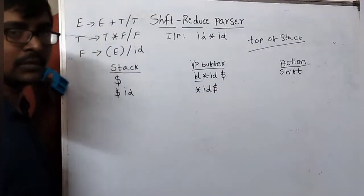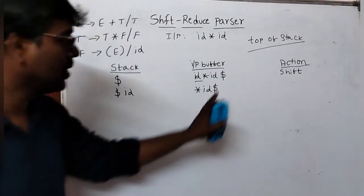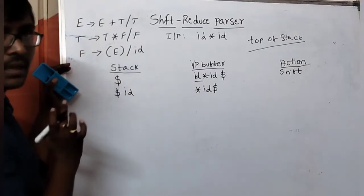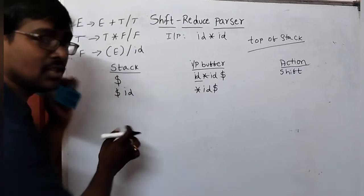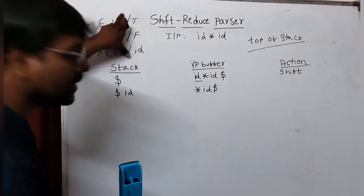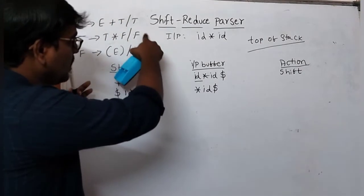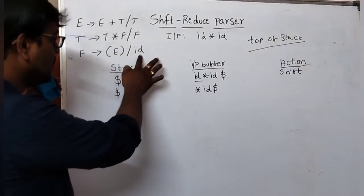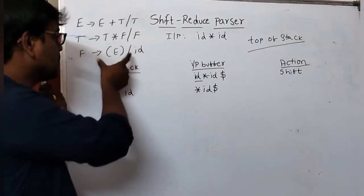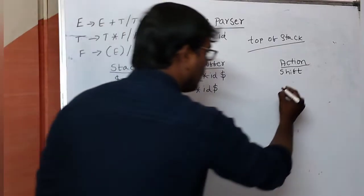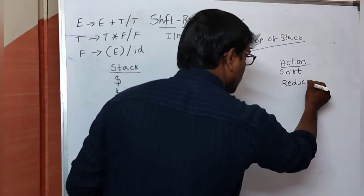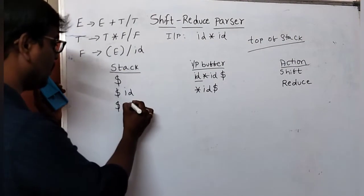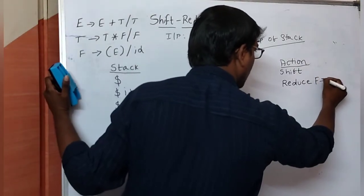After the shift, id is shifted to the stack and the remaining input is * id $. Based on this action the next step is performed. The top of the stack is now id. We check: is id present in the right-hand side of any grammar production? Yes — F → id. So we perform a reduce operation.